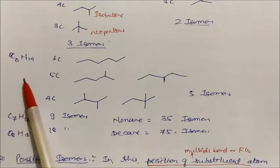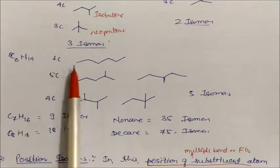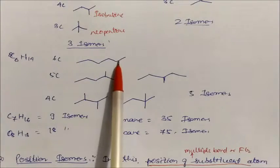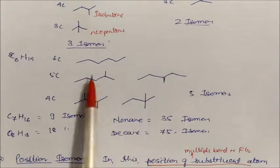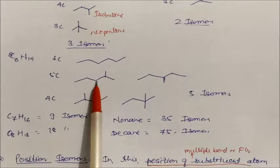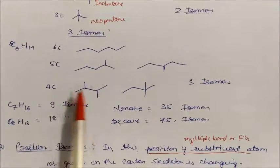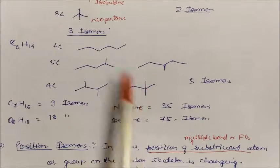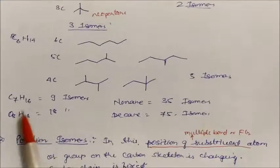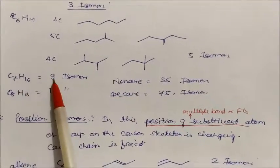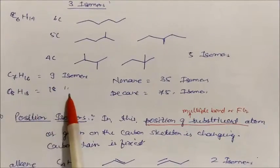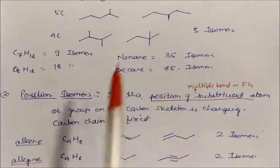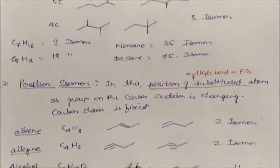Similarly, for hexane the largest carbon chain has six carbons. Reducing the chain gives two isomers — one on each side. Reducing further to a four-carbon chain gives two different groups, totalling five isomers for hexane. C7H16 has nine isomers, C8H18 has 18 isomers, nonane has 35 isomers, and decane has 75 isomers. There is no specific formula — you derive structures by drawing them.